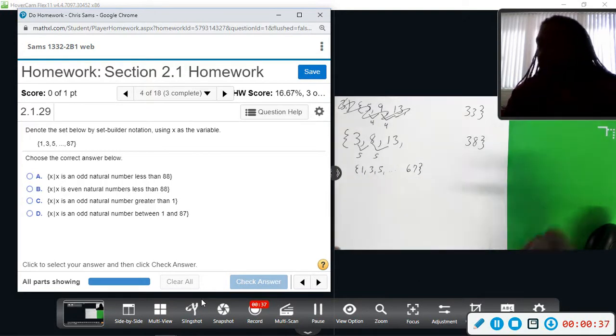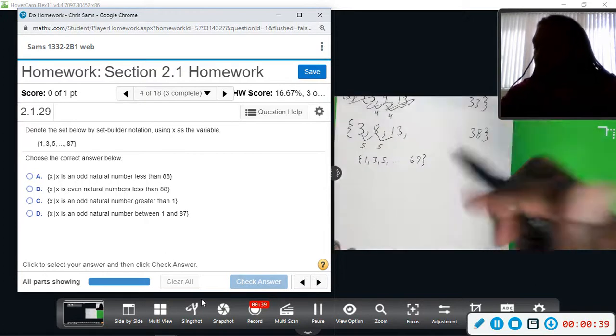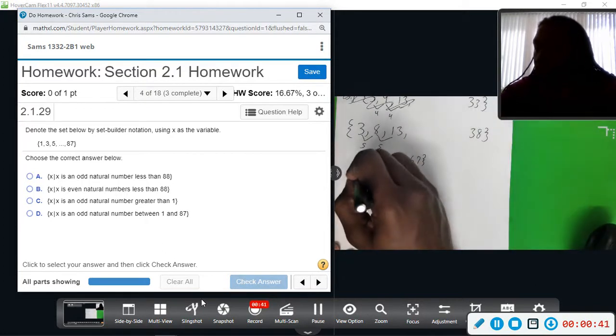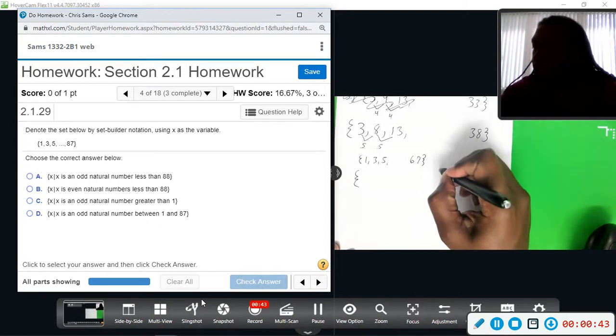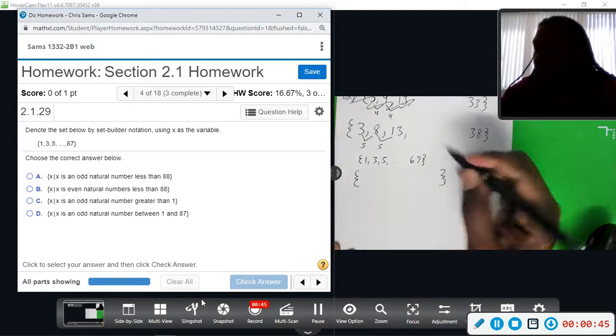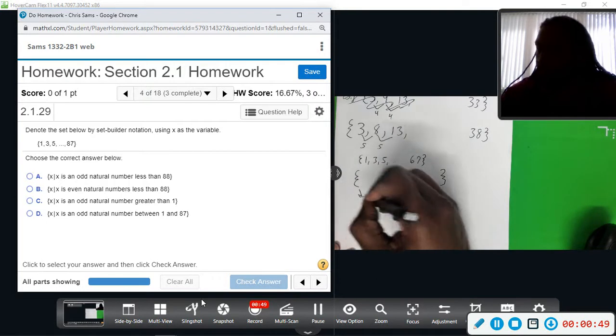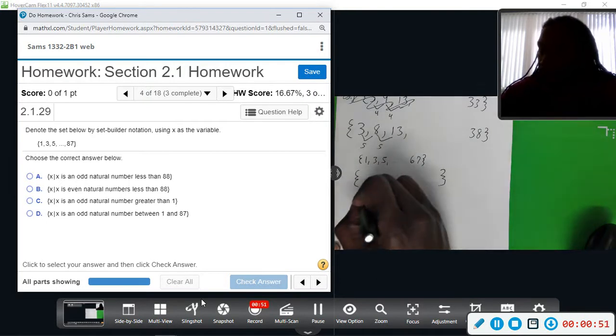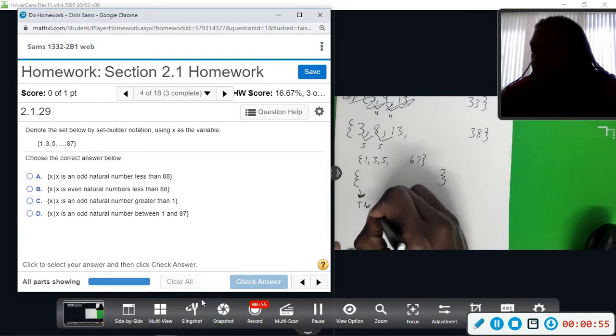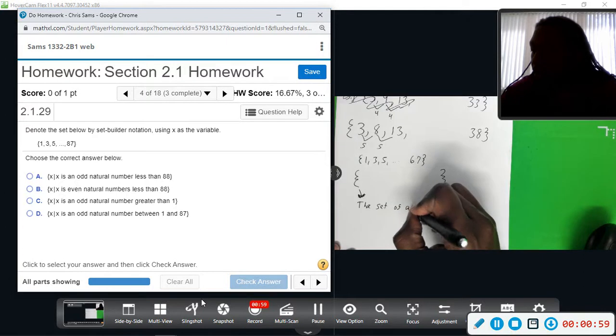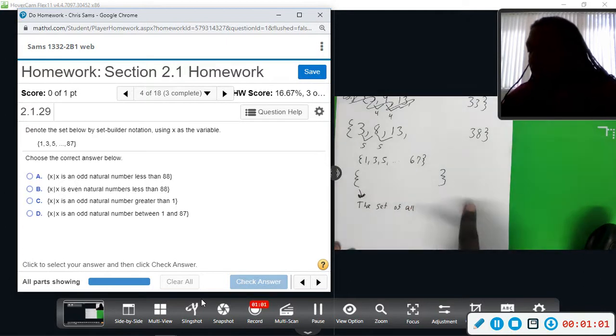The way we use set builder notation, or how it's read, is you have the curly brackets. This is read: the set of all. That's how you start out with set builder notation. The set of all what?